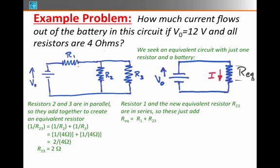Resistor 1 and this new equivalent resistor R23 are in series. So these just add and the total equivalent resistance REQ is R1 plus R23. This means we add the 4 ohms for R1 plus the 2 ohms for R23 and that gives us 6 ohms.